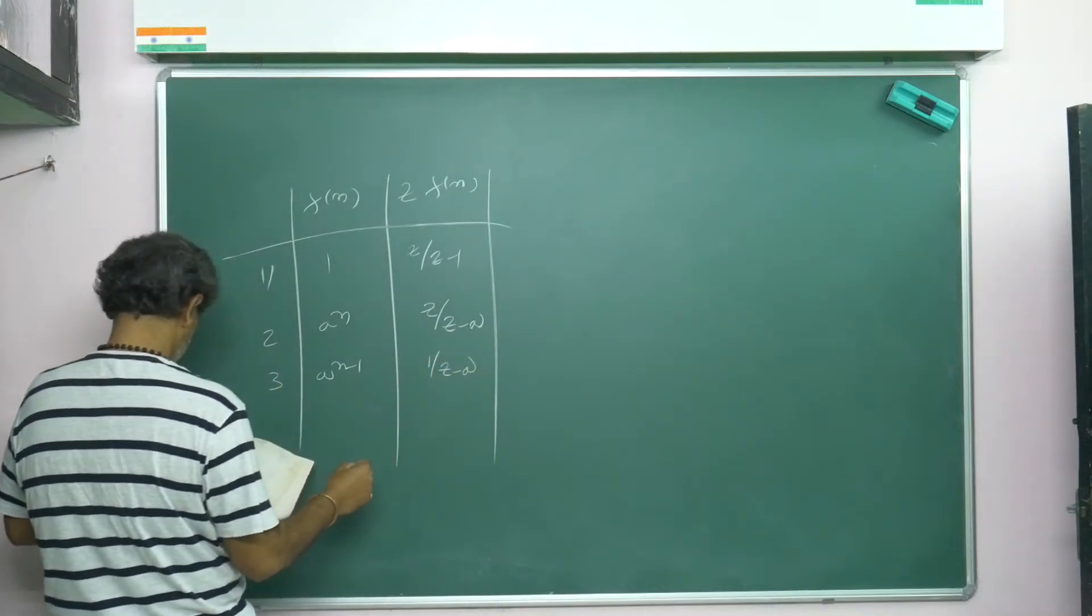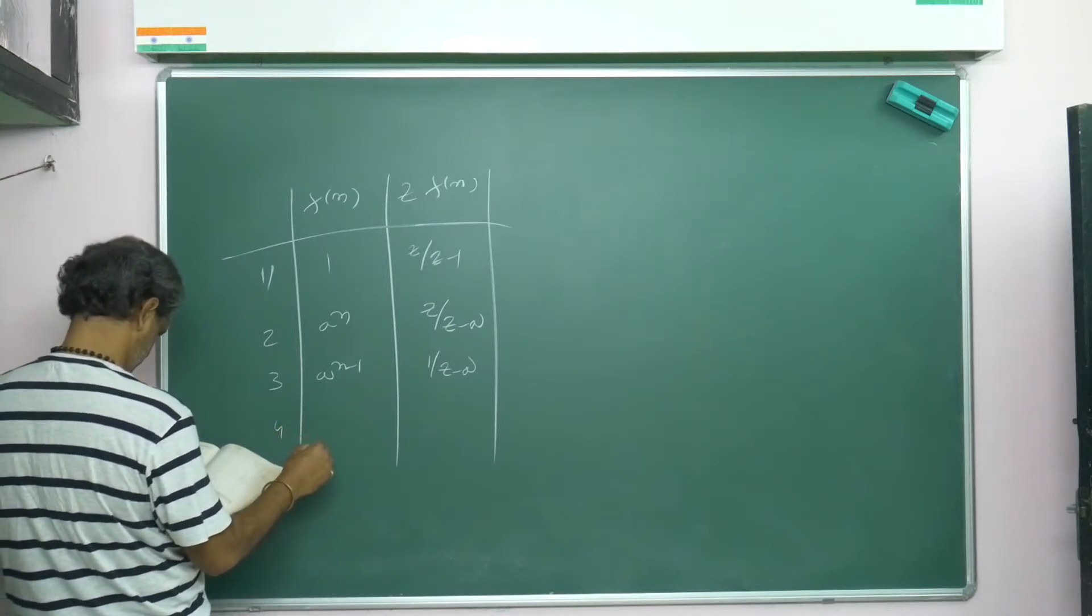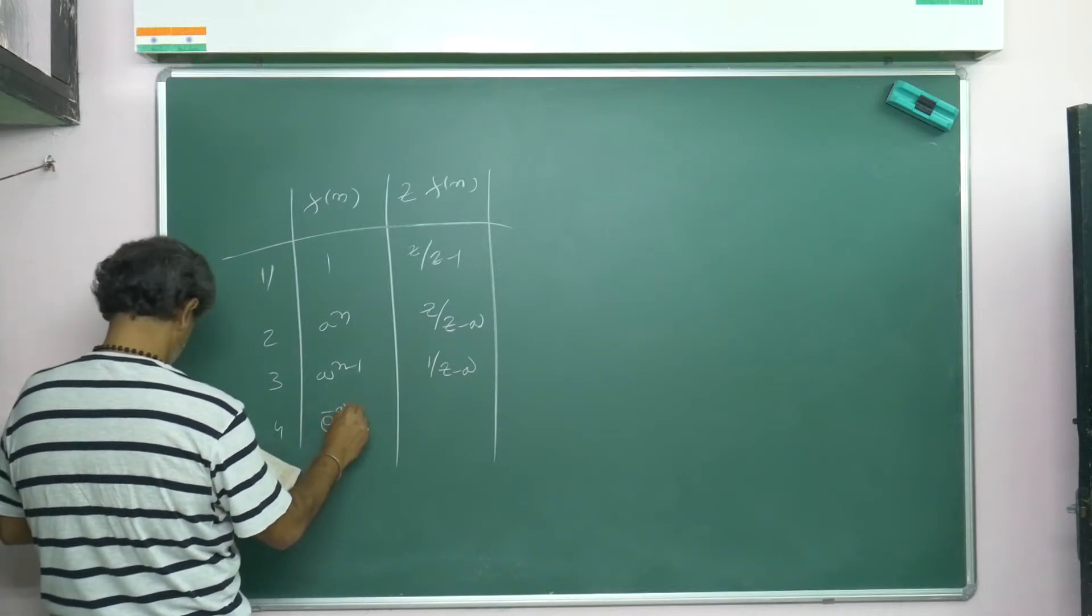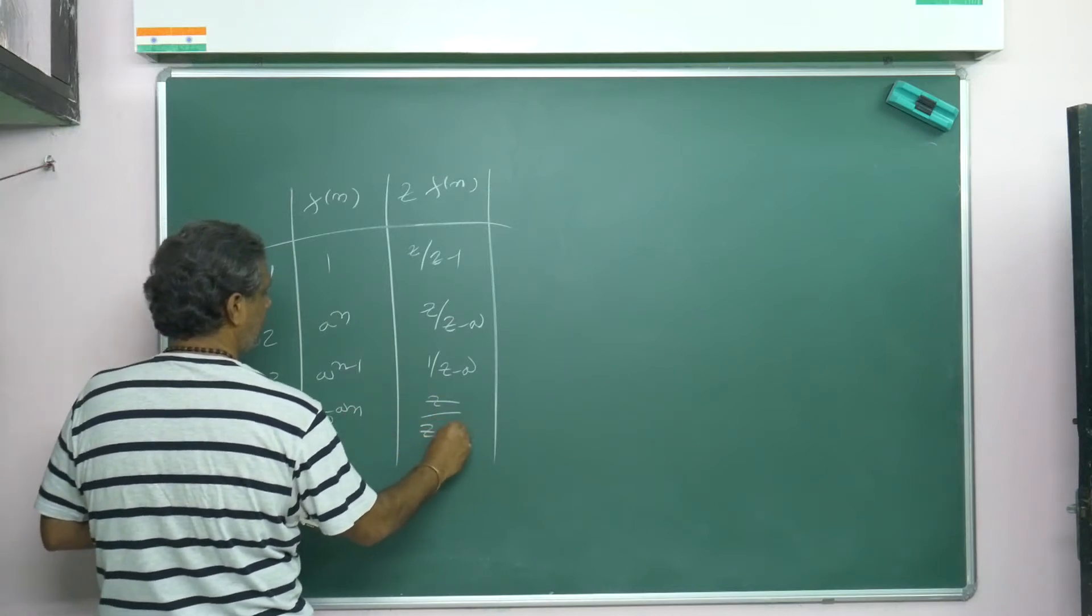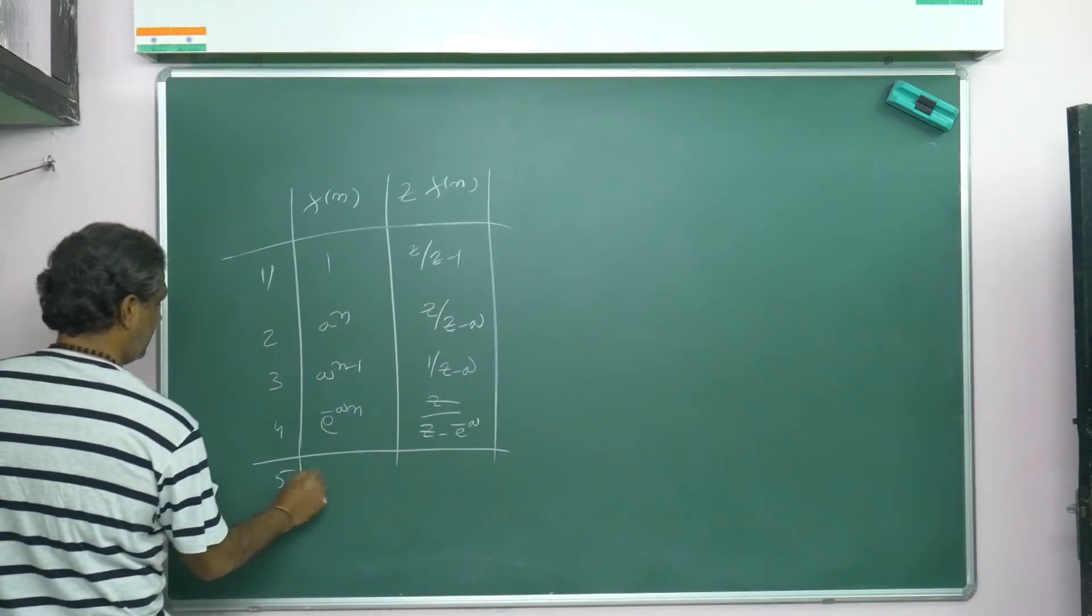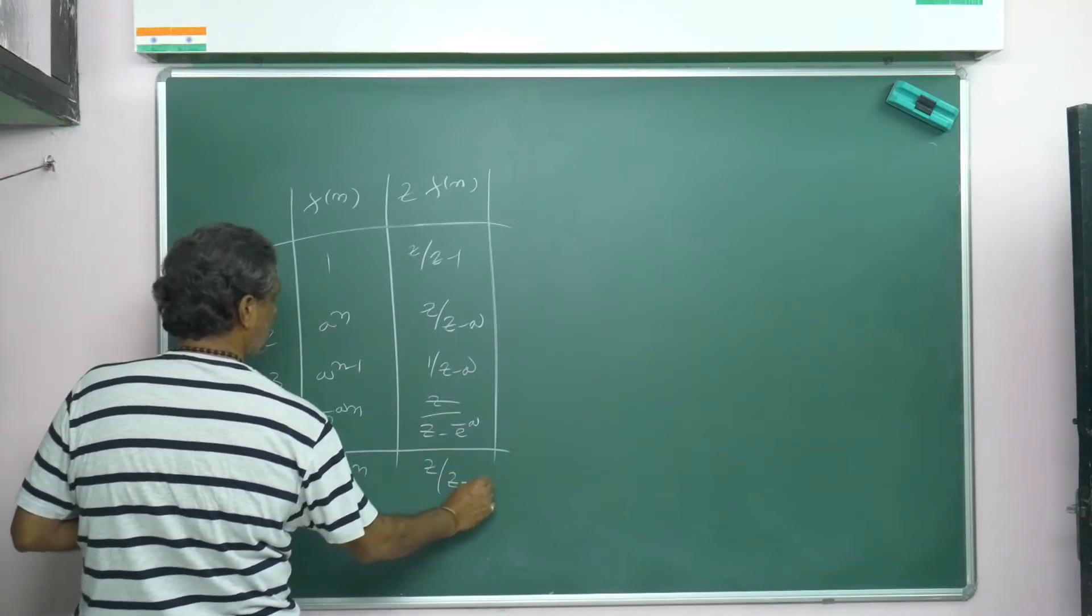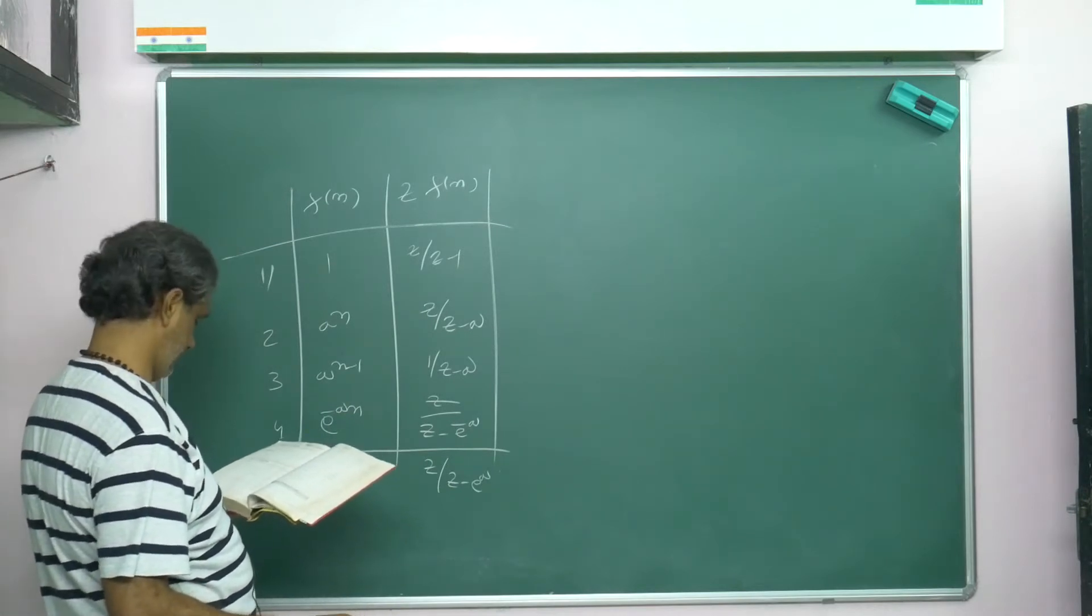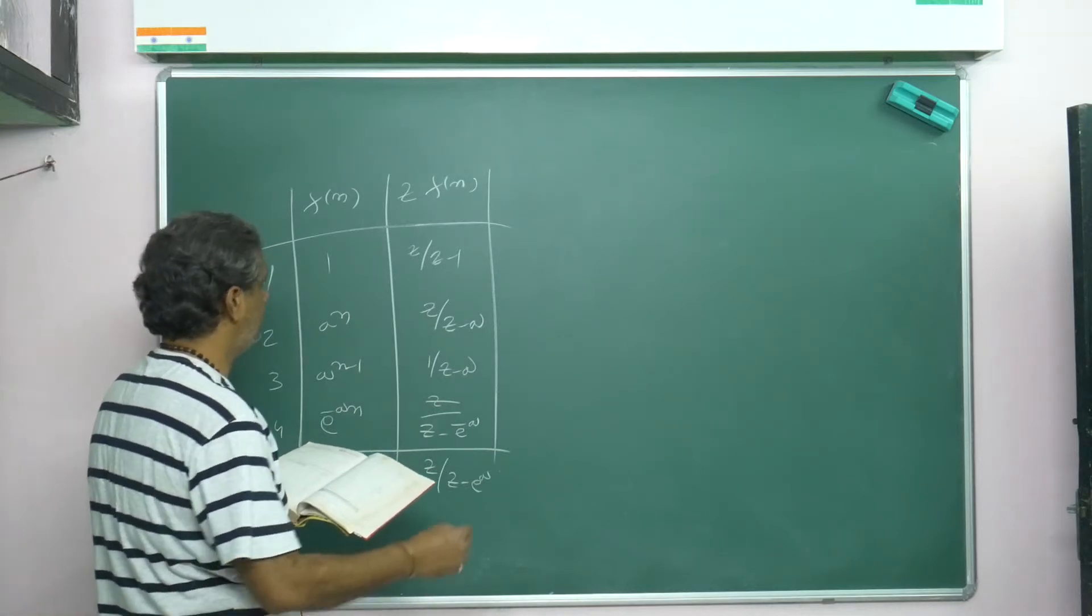Fourth formula: Z{a to the power minus n} is z/(z - e to the power minus a). Then Z{e to the power minus an} is z/(z - e to the power minus a). Then Z{a to the power n} is z/(z - a to the power a). Yes, one thing we forget...